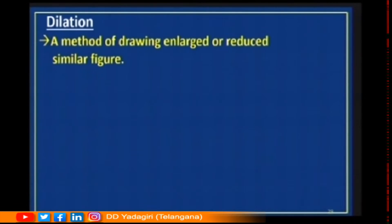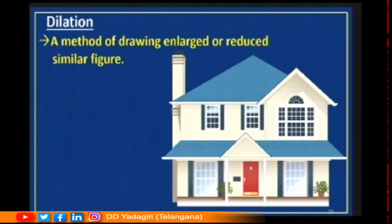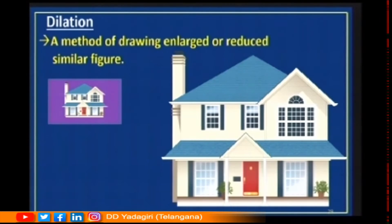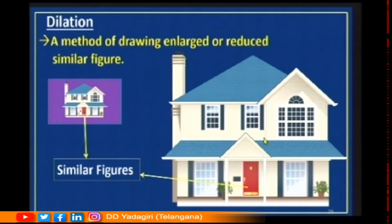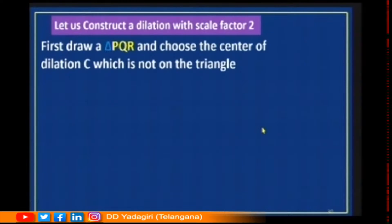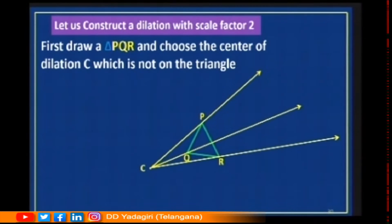Now let us understand what is a dilation — a method of drawing an enlarged or reduced similar figure. You are observing a beautiful house, and a boy takes a chart and draws this figure on the chart. These two are similar because they have the same shape but different size. In dilation, we draw similar figures — either we enlarge the figure or we reduce the figure. Let us construct a dilation with scale factor two. First draw a triangle PQR and choose the center of dilation C which is not on the triangle.